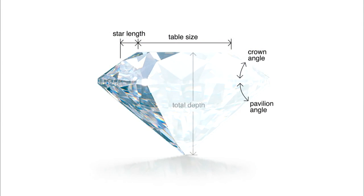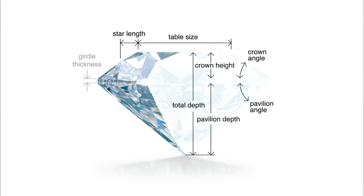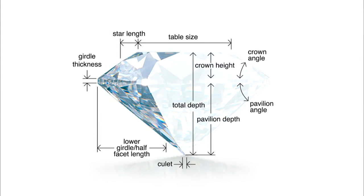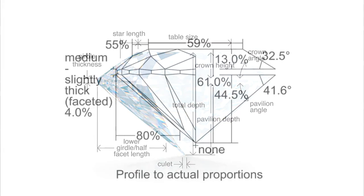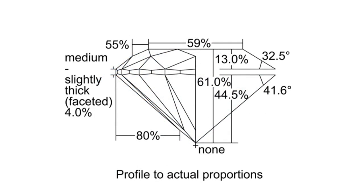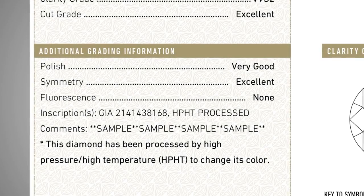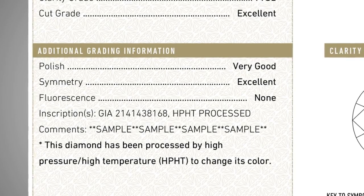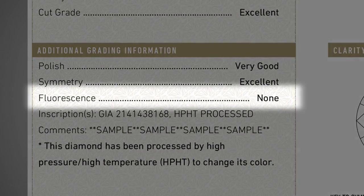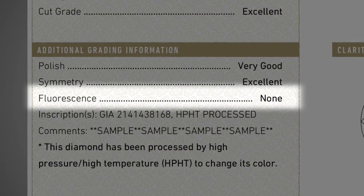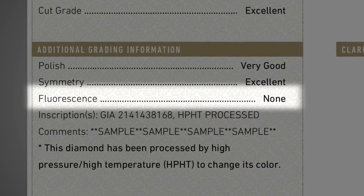The diamond's dimensions are thoroughly described, from its shape and cutting style to its precise measurements. A diagram shows the diamond's profile and its proportions. A description of fluorescence is provided as an additional identifying characteristic.